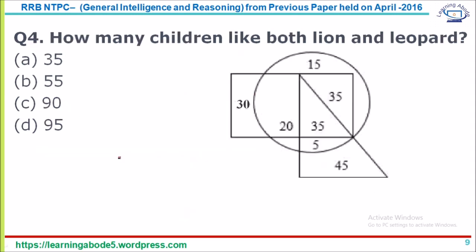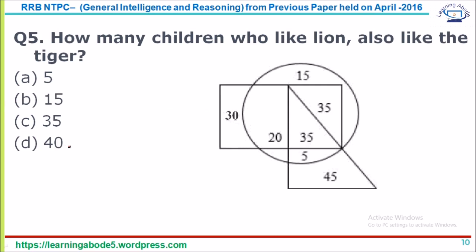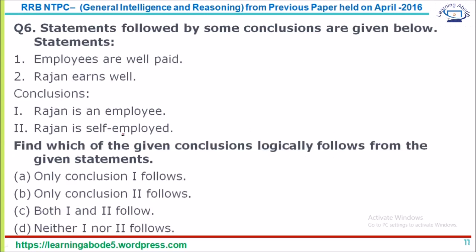Question 4: How many children like both lion and leopard? Lion is the circle, leopard is the rectangle. The common area between circle and rectangle gives 20+35+35 = 90. Answer option C. Question 5: How many children who like lion also like tiger? Common area of circle and triangle: 35+5 = 40. Answer option D: 40.